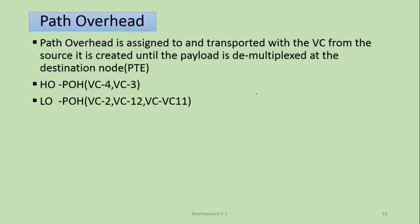Those are the details about section overhead. Let's move on to path overhead. Path overhead is very important because the trail or path trail should be managed from its source to destination. During this time we should also be able to manage the performance of the path across the links. Path overheads are created when we create a virtual container, and removed for analysis when it gets demultiplexed. We have two path overheads: one is higher order path overhead and the other is lower order path overhead.